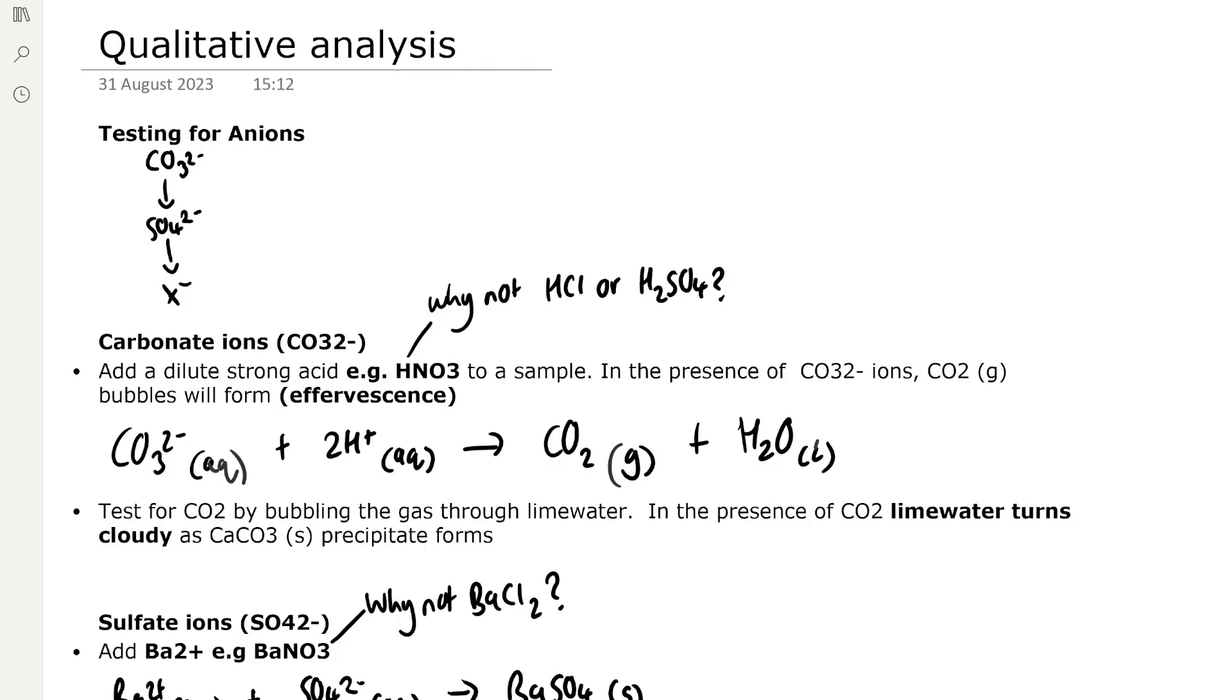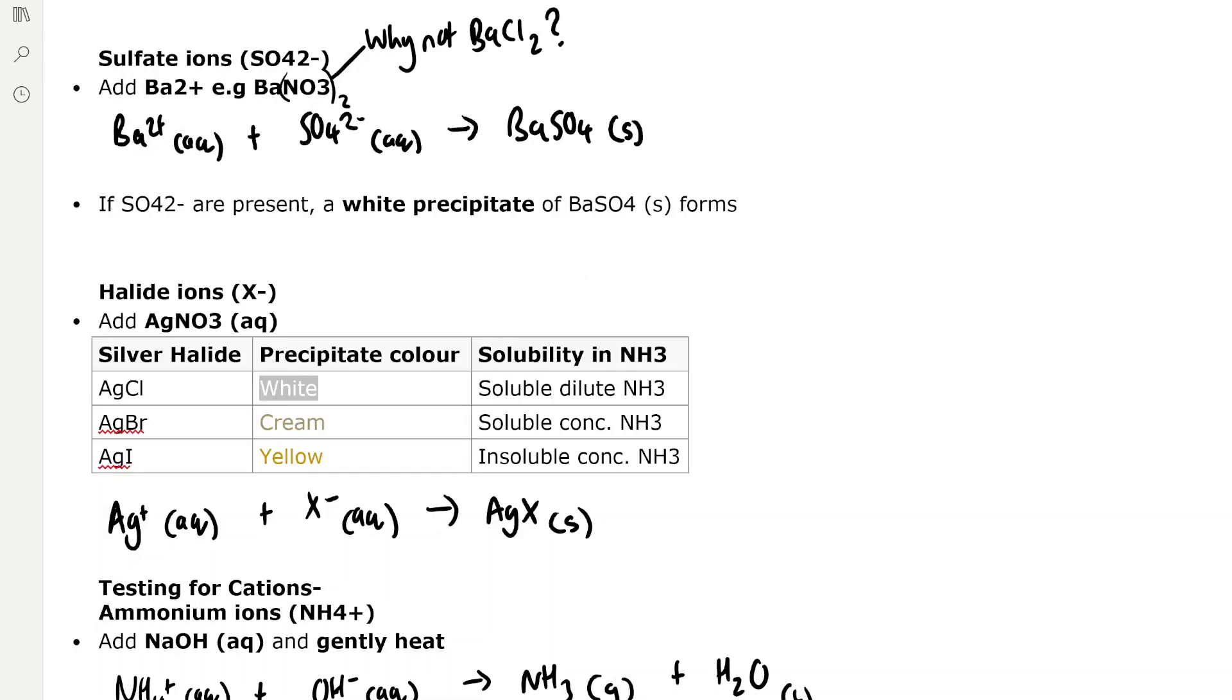We add that acid which supplies H plus ions and they react with the carbonate ions to form CO2 and H2O. We can complete the test by bubbling the CO2 gas through lime water. In the presence of CO2 the lime water turns cloudy as calcium carbonate precipitate forms.